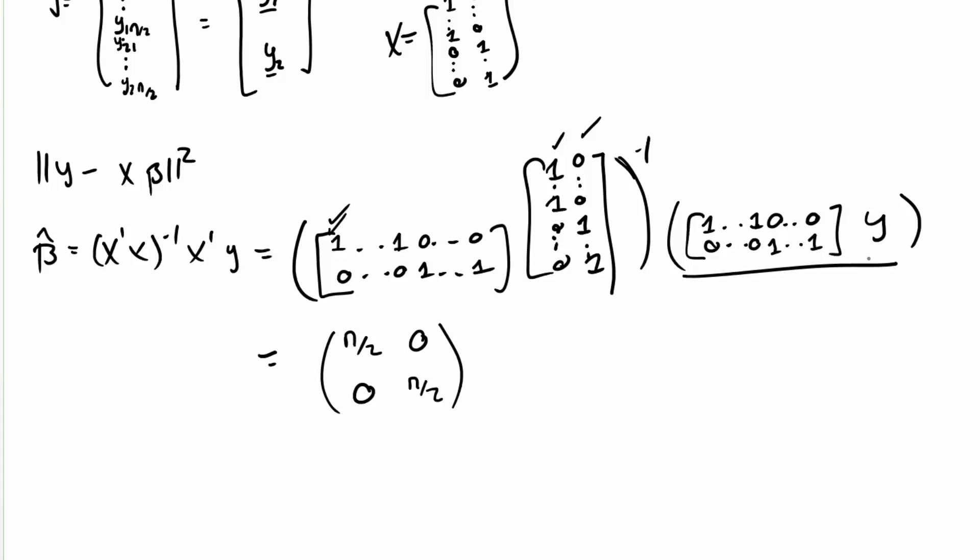Now let's look at this statement right here. This first one is going to be the sum of the first group. So let's just call that jn over 2 times y1. And the second one is just going to be j transpose n over 2 times y2.